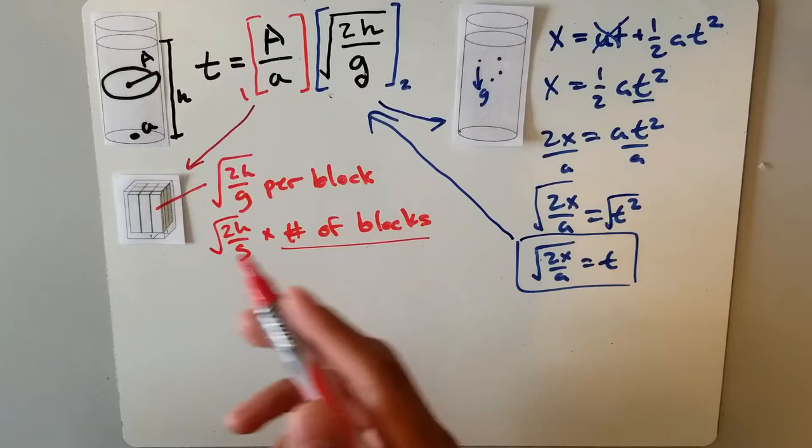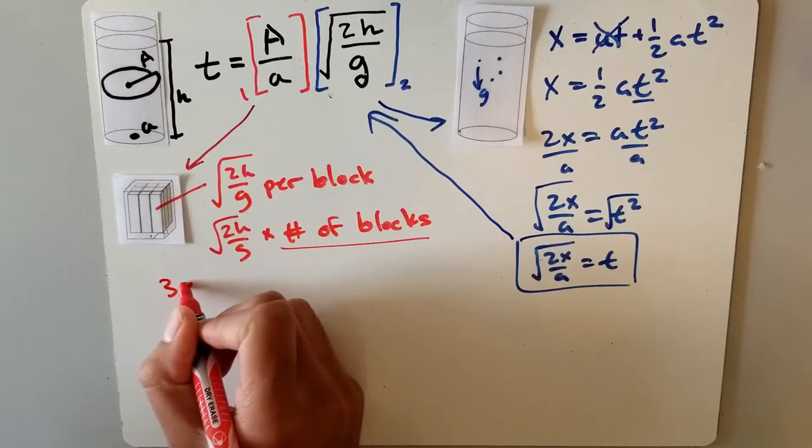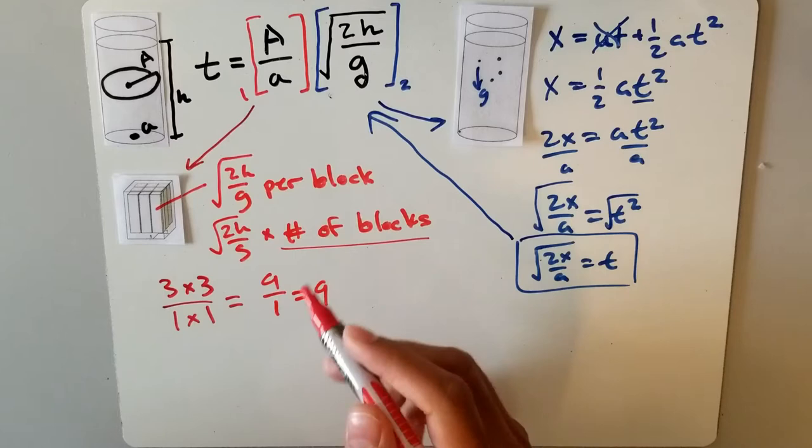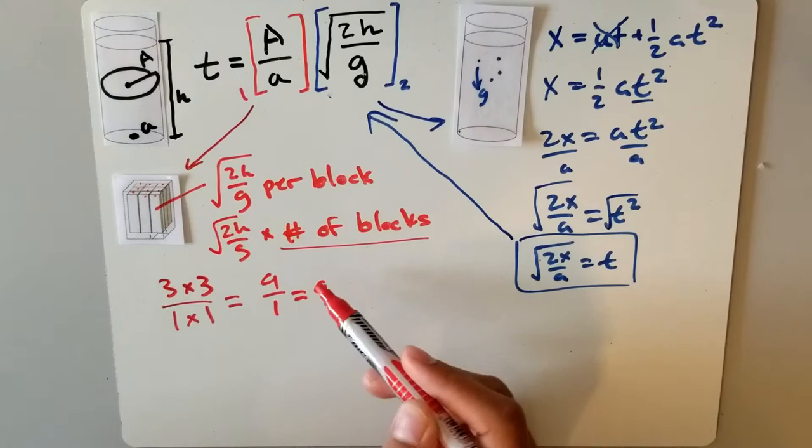As you can see in this situation, the container is a 3 by 3 and the hole is a 1 by 1. This gives us 9 over 1, which is equal to 9. As you can see, there are 1, 2, 3, 4, 5, 6, 7, 8, 9 blocks in this diagram.